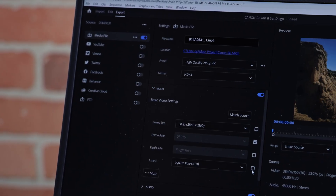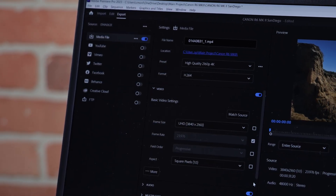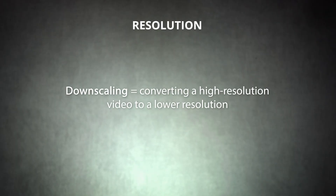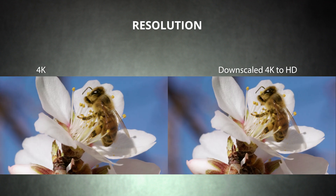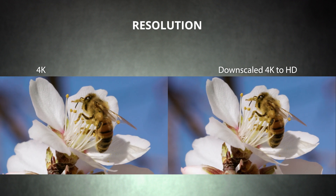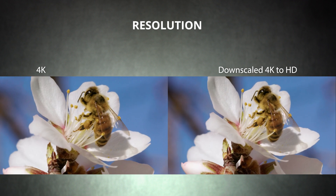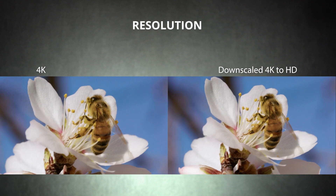When you export your video, you'll also have the chance to change its resolution. Though many cameras now shoot in 4K, many destinations still only accept 1080 HD video files. You can still edit your project in 4K and then export the finished video at a lower resolution. This is a process called downscaling — you are downscaling any time you convert a high-resolution video to a lower resolution. While the downscaling process won't preserve all of the detail from the original 4K footage, it does often result in a sharper video compared to video shot in HD.